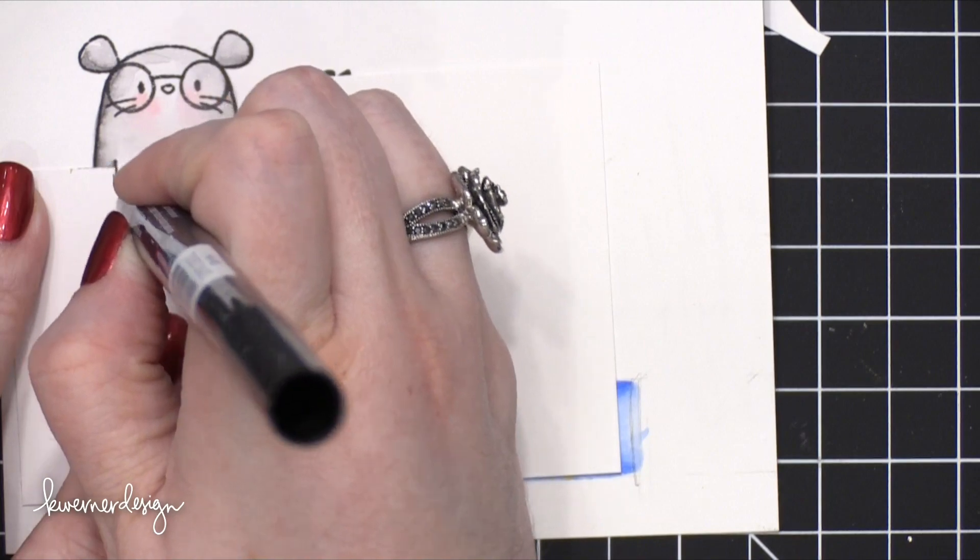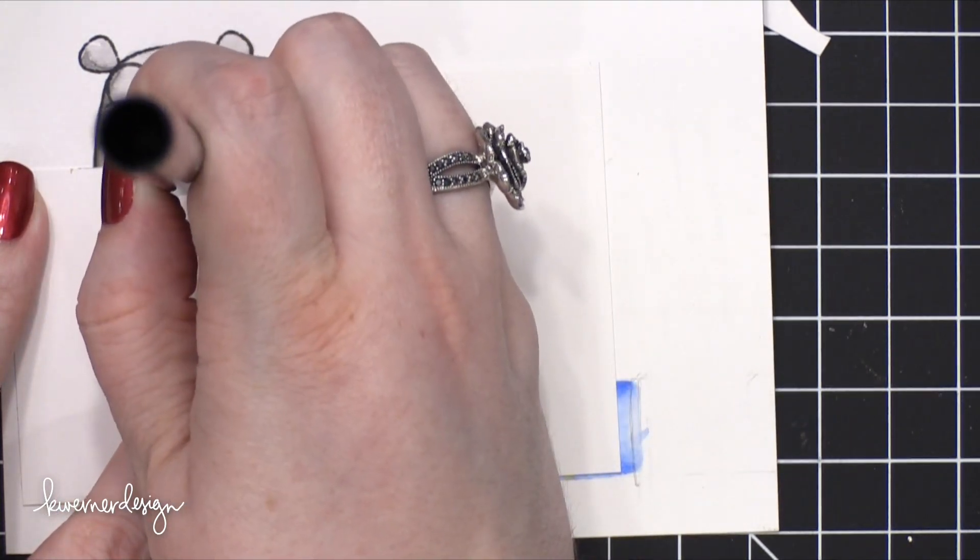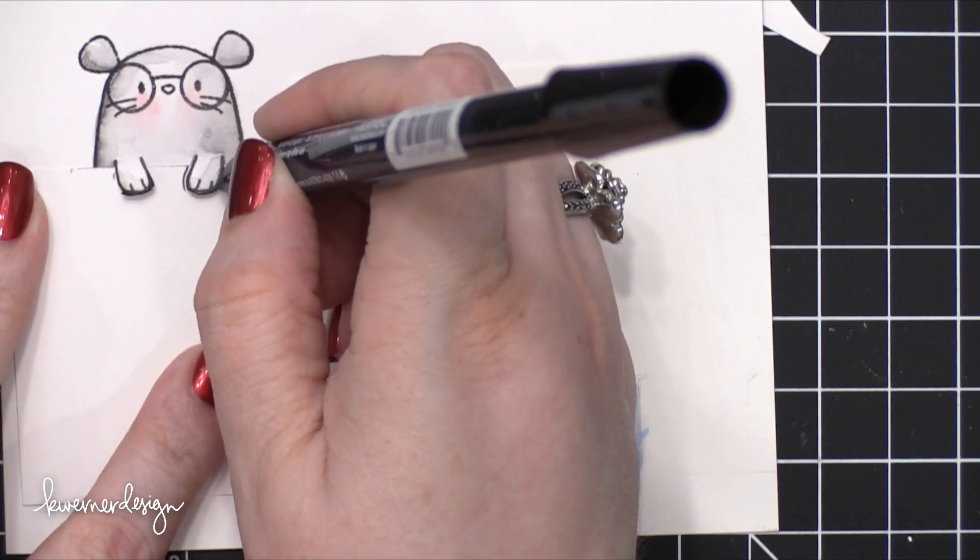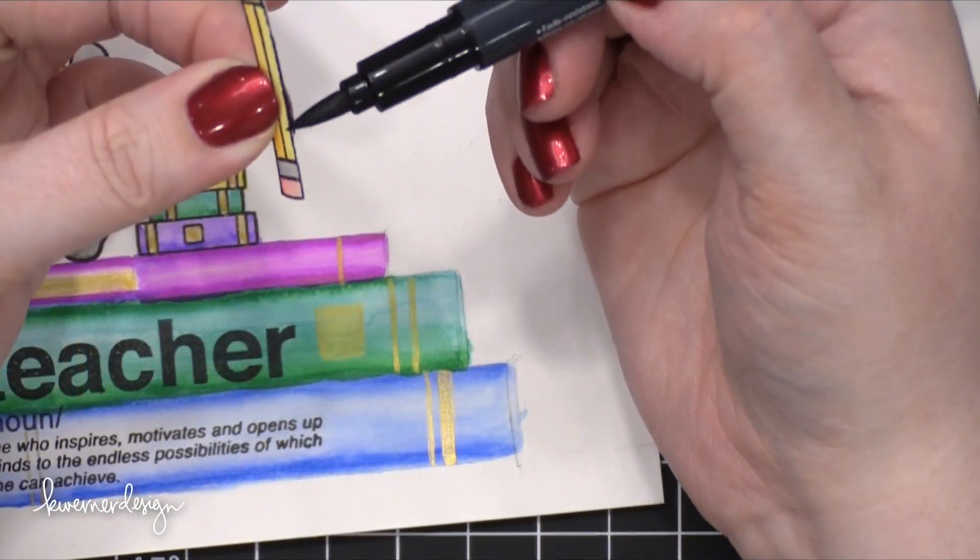I'm going to make it look like it's perfect by using a brush tip marker around that edge. I'm just using a Tuxedo Black marker from Memento, and I've put another piece of paper underneath to protect that area of the mouse, and then I was able to paint the edges.